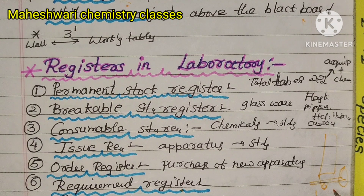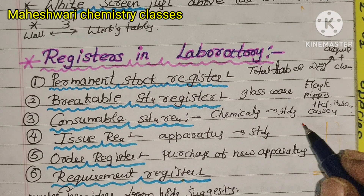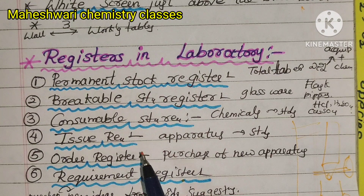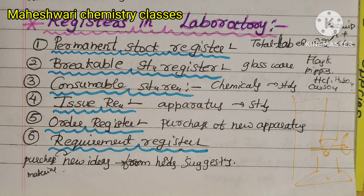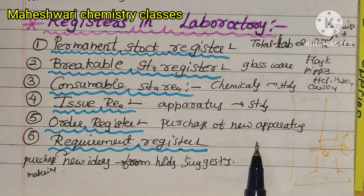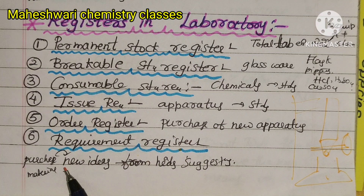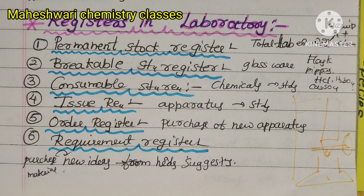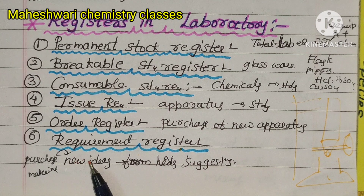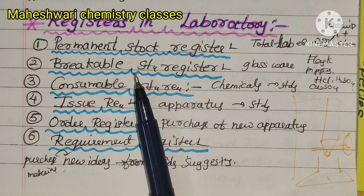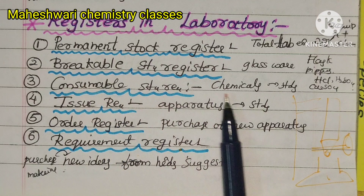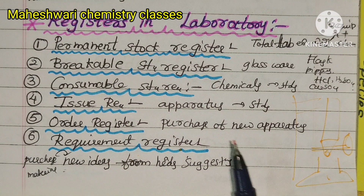The issue register records entries for items like conical flasks, stands, and burette arrangements. The order register is for purchasing new apparatus. The requirement register records what is needed. To summarize: permanent stock register, breakable stock register, consumable stock register, issue register, order register, and requirement register.